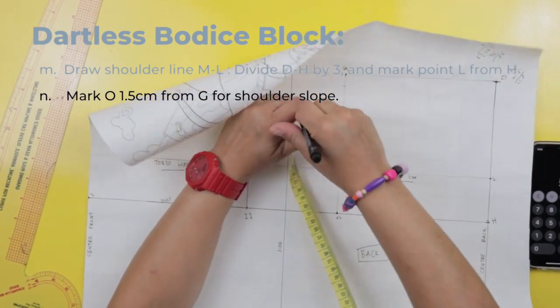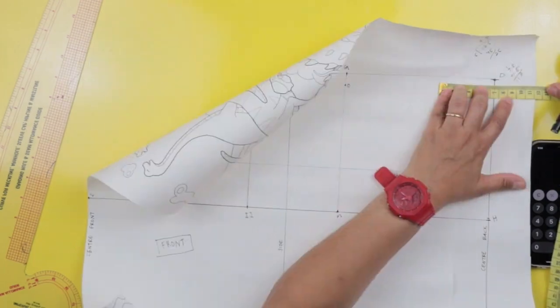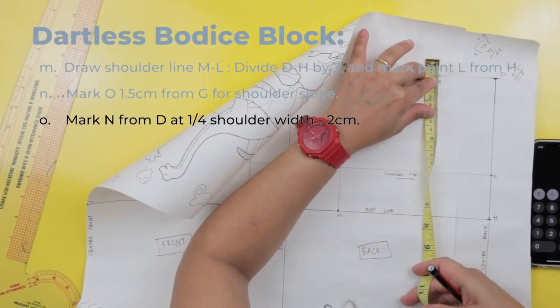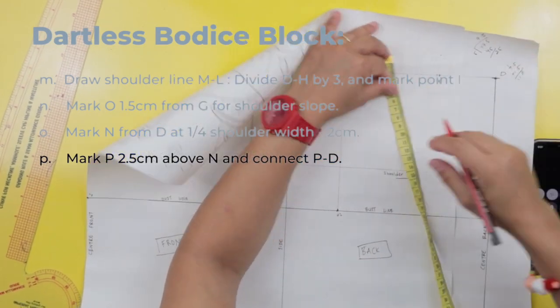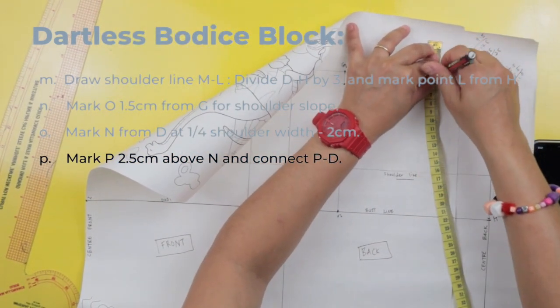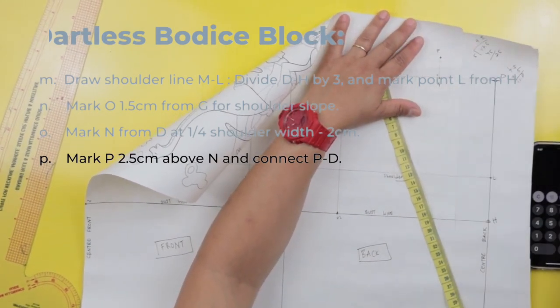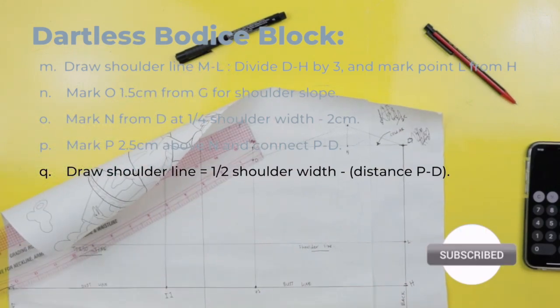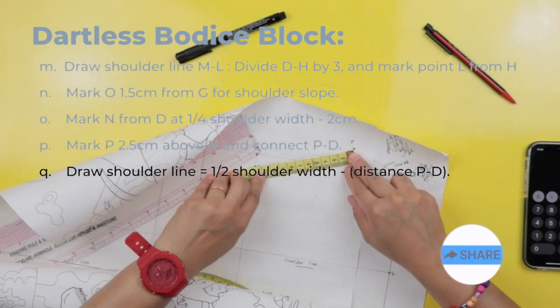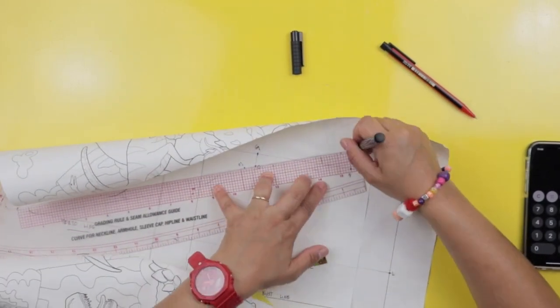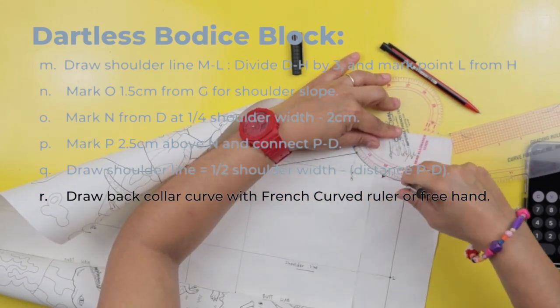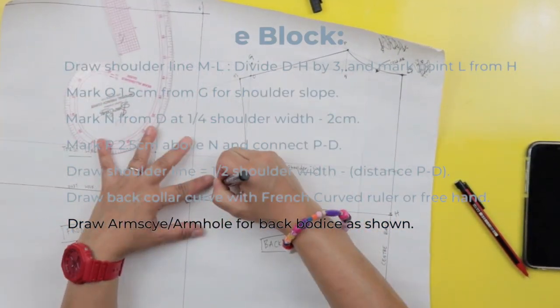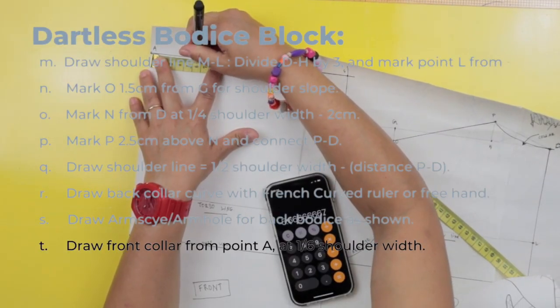Mark 0.0 1.5 centimeters from G for the shoulder slope. Mark N from D which is at 1 fourth your shoulder width minus 2 centimeters and then go up 2.5 centimeters above N. Mark that as P and connect P to D. And now draw your shoulder line which is half your shoulder width minus distance P to D. Make sure that this line goes from P to O. Finish off the back collar curve with a French curve ruler or just freehand it and then draw the armside or armhole slowly point to point while pivoting your curve ruler. Label that and now from the front collar which is point A.